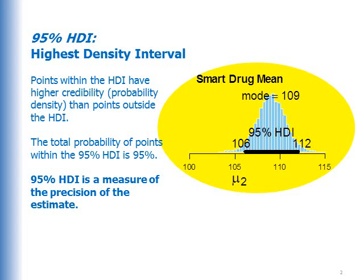We'll zoom in on the posterior distribution on mu2. You can see marked in the distribution as a black bar the so-called 95% highest density interval. Points within the HDI have higher credibility — probability density — than points outside the HDI. The total probability of points within the 95% HDI is 95%. The 95% HDI is a measure of the precision of the estimate. When that 95% HDI is narrow, we have a precise estimate. When it's wide, it's not a very precise estimate.